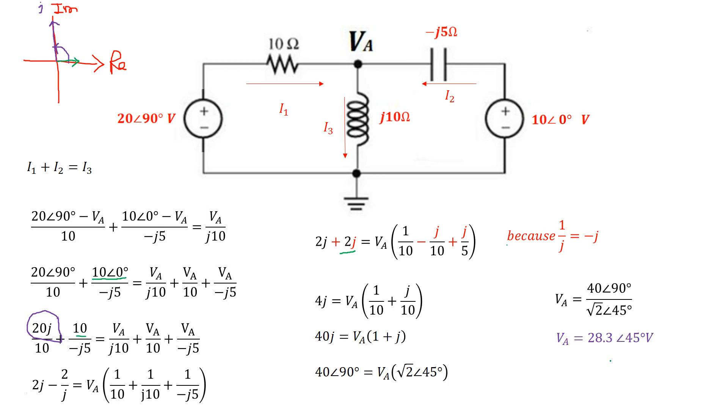Which leads us to VA equals 28.3, angle 45 degrees volts. So this is the voltage at node A. This is the voltage at node A in the phasor domain.